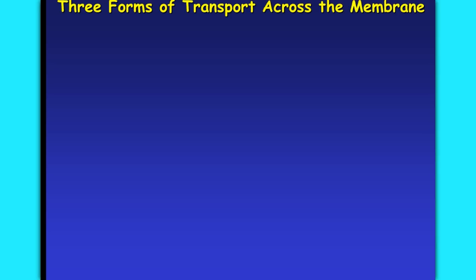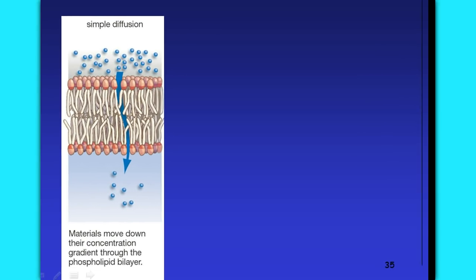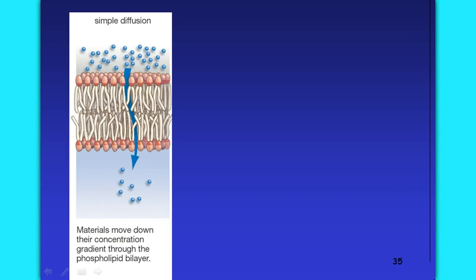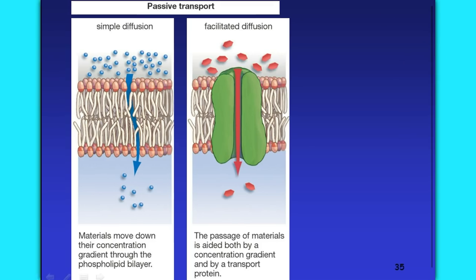We're going to look at the three forms of transport across the cell membrane. The first form we've studied already is simple diffusion, which enables molecules to move across the cell membrane from high to low concentration. There's also facilitated diffusion, which is diffusion aided by one of those transport channel proteins. These are both forms of passive transport.